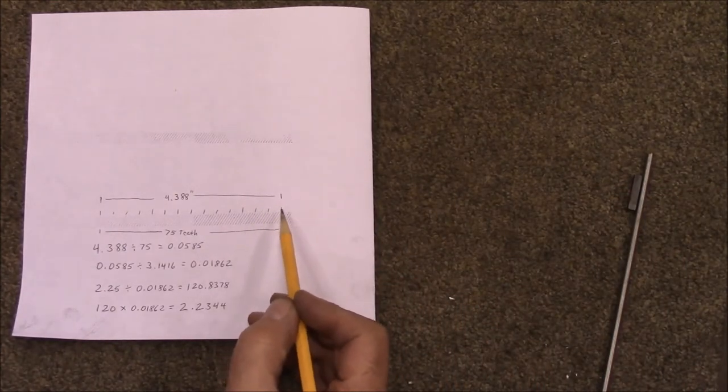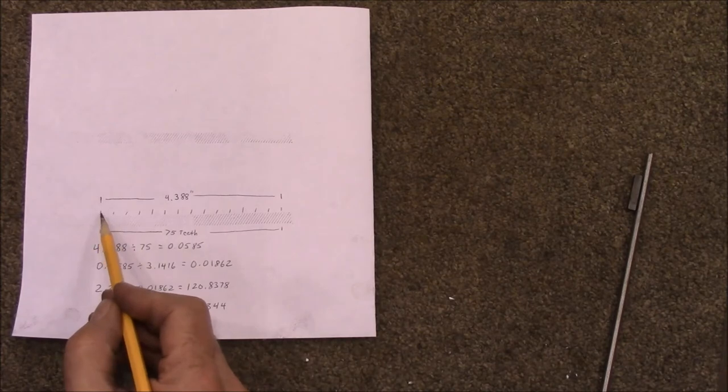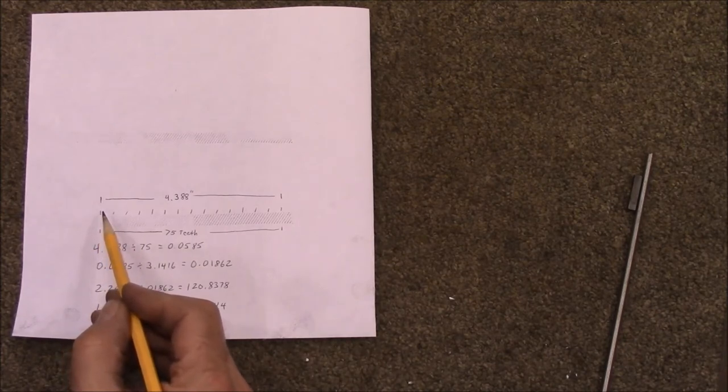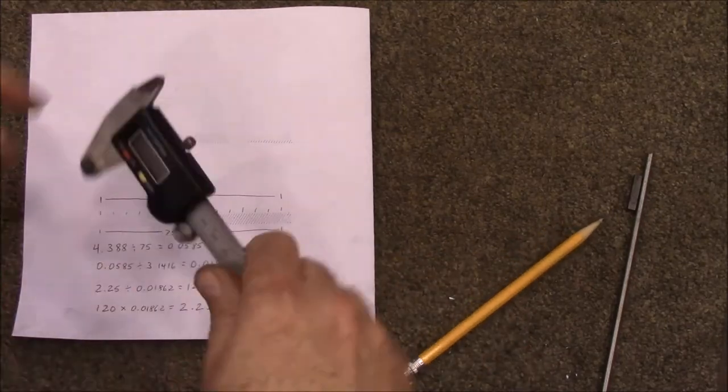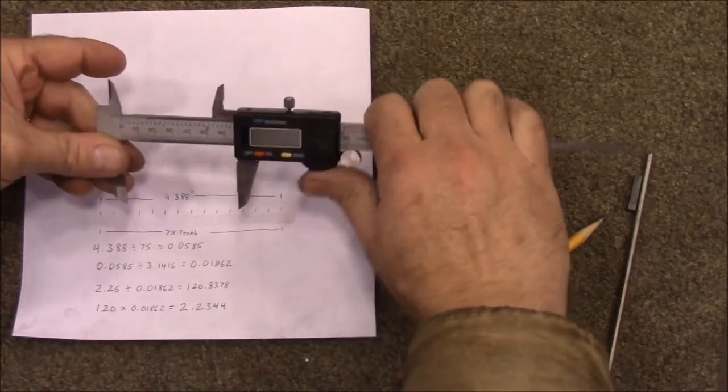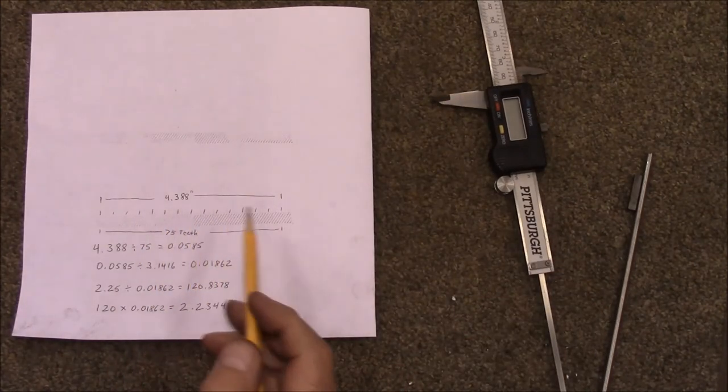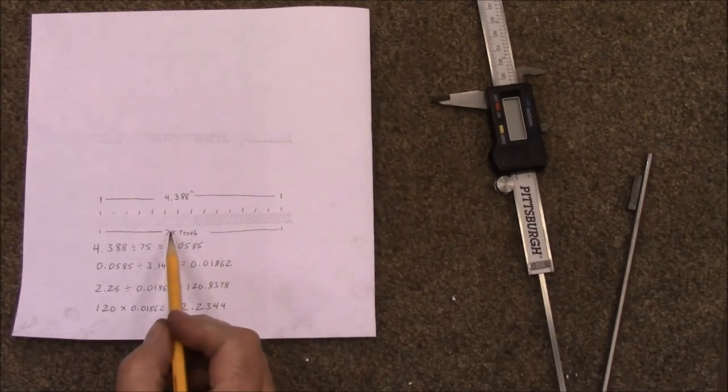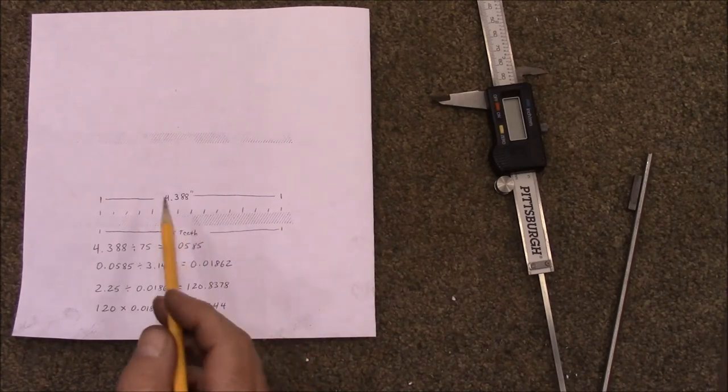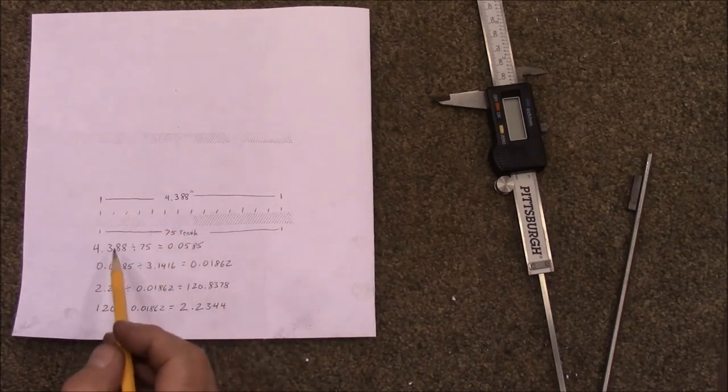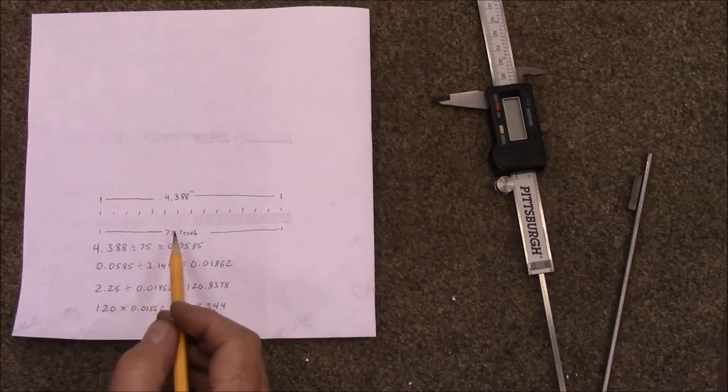So then I measured that from here to here with my calipers. Measure it out, and it was 4.388. Then when you count the teeth, there's 75 teeth there. So you take the distance 4.388, you divide that by the number of teeth, which gives you this number right here.